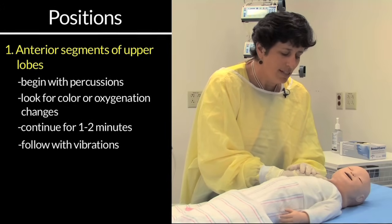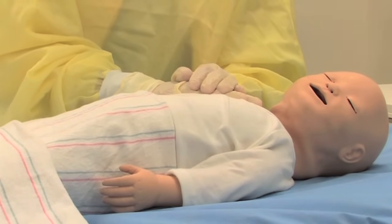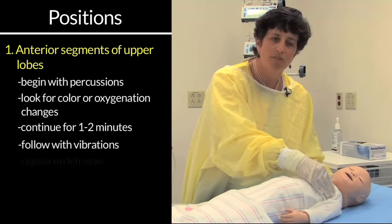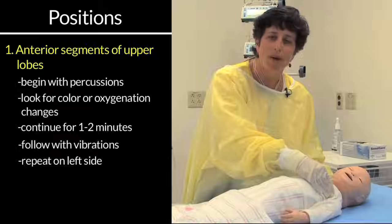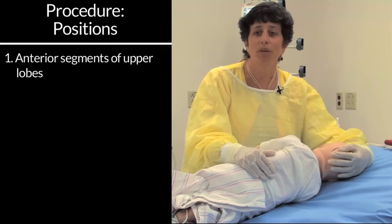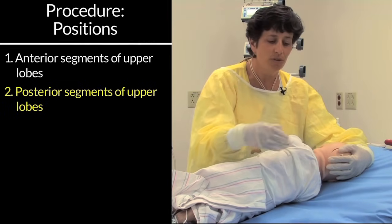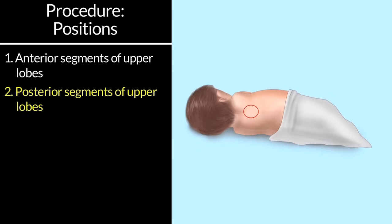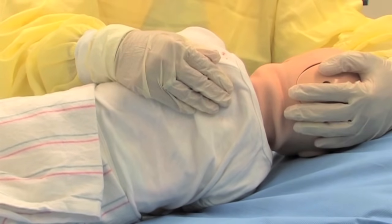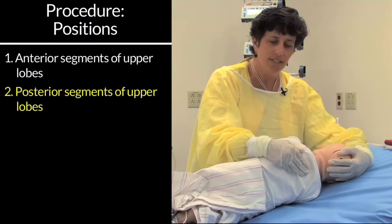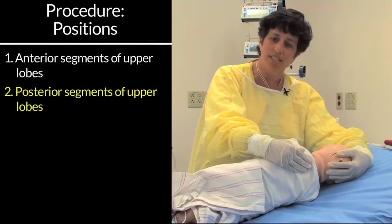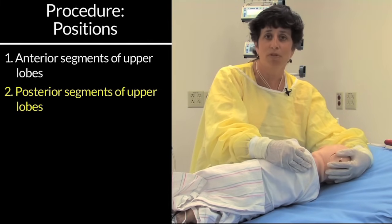I would wait for the patient to exhale and vibrate, doing that three or four times to see if any productive secretions are obtained. Then move on to the left side for one to two minutes as well. After finishing the anterior upper lobes, move on to the posterior segments of the upper lobes. Starting with the right side, keep the patient flat; when coming to the left side, elevate the head of the bed slightly and percuss between the spine and the scapula using that cupping motion for one to two minutes, followed by vibrations on exhalation. If the patient needs suctioning, you can do so at this point before moving to the next position.